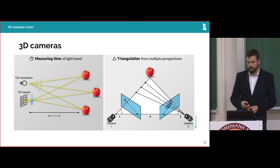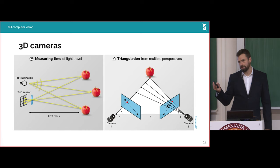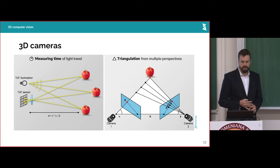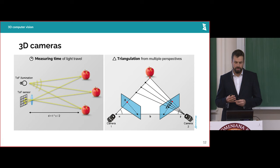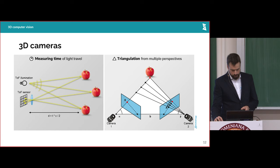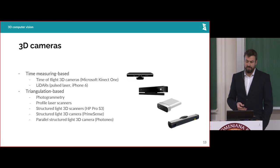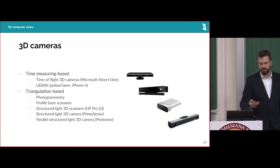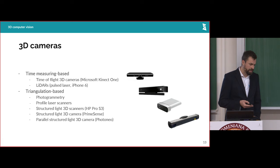There are two main principles for 3D vision sensing. The first is measuring time — the time it takes for a particle or wave to travel from a source to the object and back to the sensor. The second is triangulation: cameras are first calibrated and then, using epipolar geometry, the coordinates of a 3D point are calculated from the intersection of projection lines. These principles are used in time-of-flight cameras, LiDAR, photogrammetry, profile laser scanners, and structured light systems.